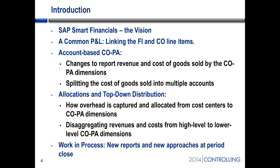A lot of people don't realize that you can actually do allocations and top-down distribution in account-based COPA. Top-down distribution was released in about 4.7, but almost nobody knows. I'll talk about how overhead costs get captured, how they get allocated, and how you do these disaggregations where you post things at a fairly high-level dimension like region or product group and break it down to all the assigned items.